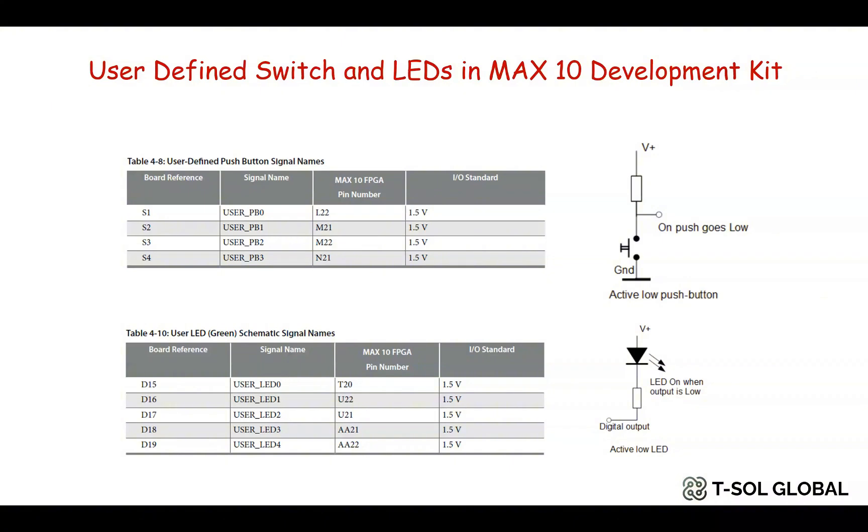So to show the correct logic output in the Max 10 development board we need to use an inverter at the output of the logic we develop. So we will show this in the Verilog code of the example in Quartus Prime. So please be careful if you are using Max 10 development kit as it can be very confusing sometimes. But for other FPGA development kits maybe it will not be an issue and you can directly use the code we just showed here. And you do not need to use any inverter at the output for those development kits.